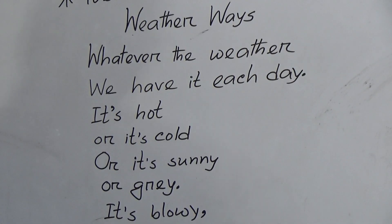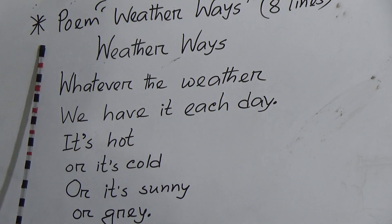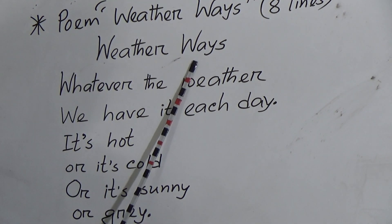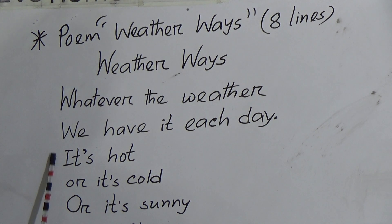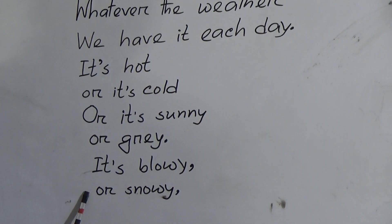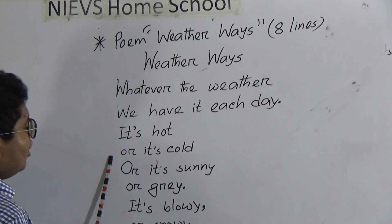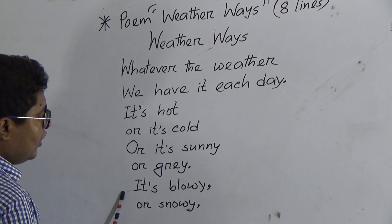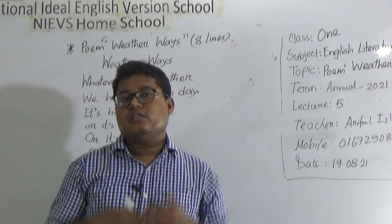Eight lines, eight marks; title, two marks; total ten marks. Let me read the full poem one last time. Title: 'Weather Ways'. 'Whatever the weather, we have it each day. It's hot or it's cold, or it's sunny or gray. It's blowy or snowy.' That is all eight lines. Remember: apostrophe placement, capital letters for the title, and full stops after the correct lines.